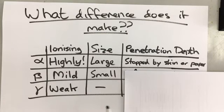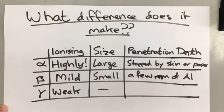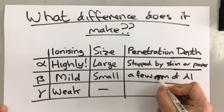However, beta particles are slightly smaller so they can go through skin or paper but they can't go through just a few millimeters of aluminum.